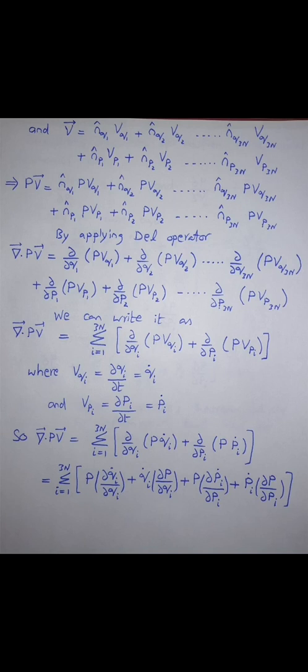The velocity vector in 6N-dimensional space becomes v = n̂_q₁ v_q₁ + n̂_q₂ v_q₂ + … + n̂_{q₃ₙ} v_{q₃ₙ} for position components, and n̂_p₁ v_p₁ + n̂_p₂ v_p₂ + … + n̂_{p₃ₙ} v_{p₃ₙ} for momentum components. Multiplying ρ on both sides gives ρv with the corresponding position and momentum components.